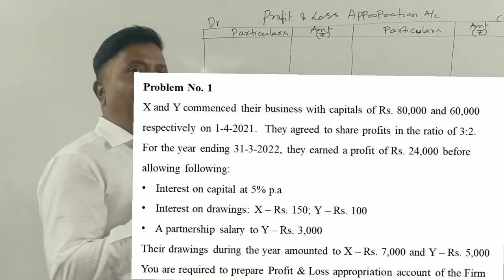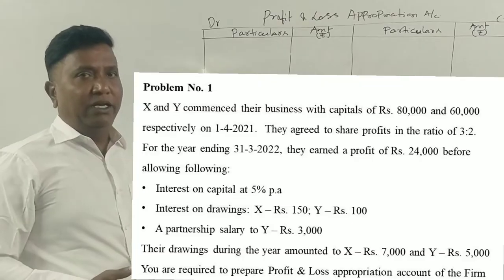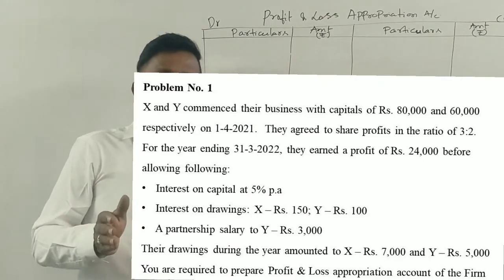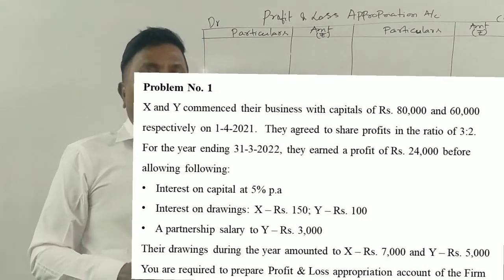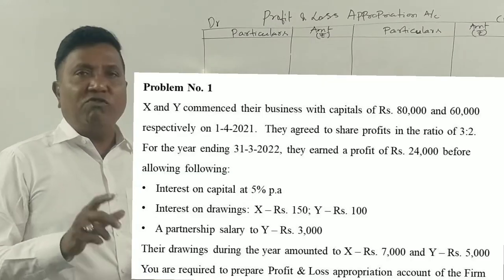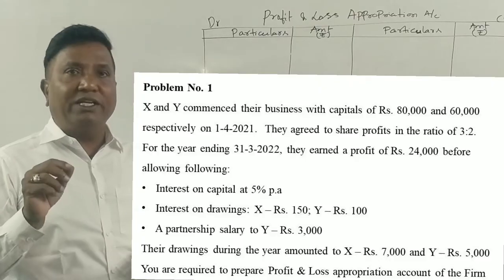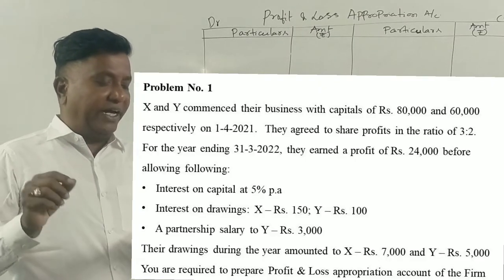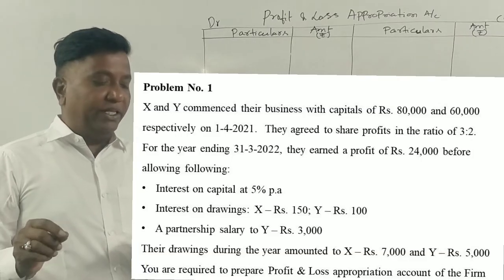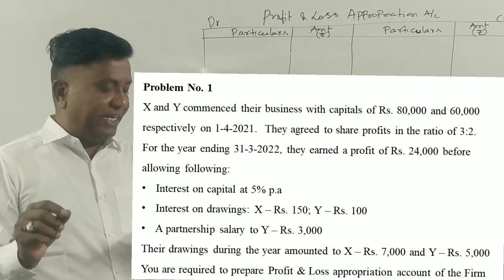What is the Profit and Loss Appropriation Account? Why is the Profit and Loss Appropriation Account prepared? Interest on Capital at 5%, Interest on Drawings.